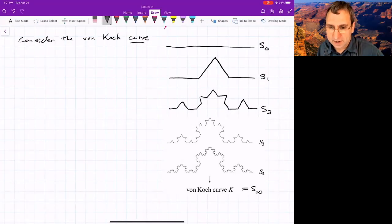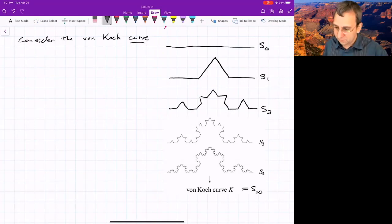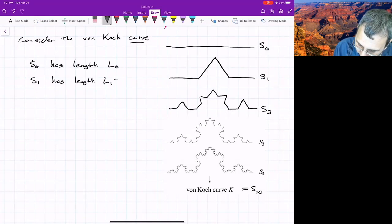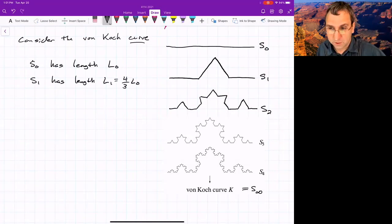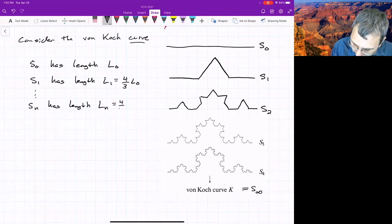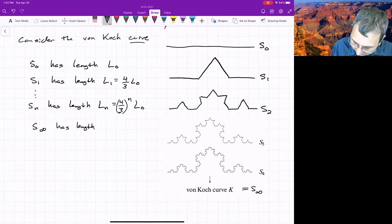And to see this, just, you could observe how the length is growing at each of these iterates. S0 has length L0. Then the length of S1 has length L1, which is four-thirds L0. And so hopefully you can see where this is going, right, at each step of the construction. So Sn has length Ln, four-thirds raised to the n, L0. S infinity has length L infinity, which is the limit as N goes to infinity of Ln. But, right, four-thirds is greater than one.